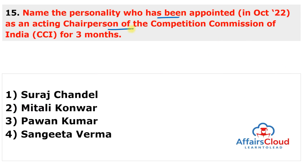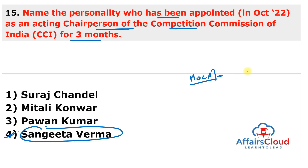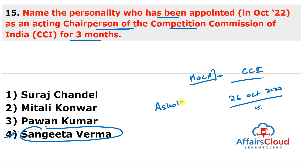Next question: who was appointed as the acting Chairperson of the Competition Commission of India for three months? The answer is Dr. Sangeeta Varma. The Ministry of Corporate Affairs appointed Dr. Sangeeta Varma, a member of the CCI, as acting Chairperson with effect from 26th October 2022, for three months or until a regular chairperson is appointed. Her appointment follows the resignation of full-time Chairperson Ashok Kumar Gupta, an IAS officer who retired on 25th October 2022 and had been CCI chairperson since 2018.